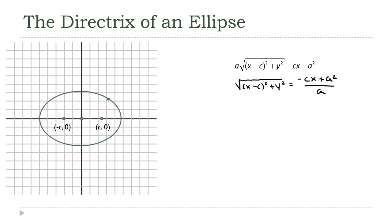All right, so now what I'm going to do, I'm going to leave the left side alone. It's going to be the square root of (x - c)² + y². And over here on the right-hand side, I'm going to factor out c over a. So if I factor out c over a, this becomes a² over c minus x. Okay, and there it is.